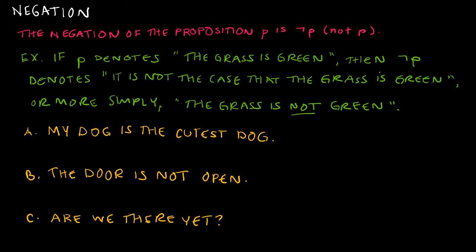The first connective is a negation. The negation is 'not,' and this is the symbol we would use. The negation of the proposition P is not P. For example, if P denotes 'the grass is green,' then not P denotes 'it's not the case that the grass is green.' Now, it's silly to write it that way, so instead we say 'the grass is not green.'